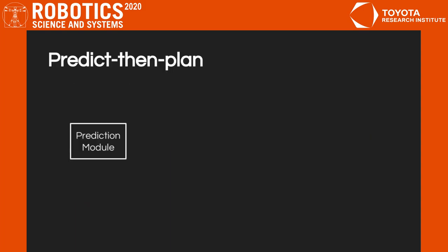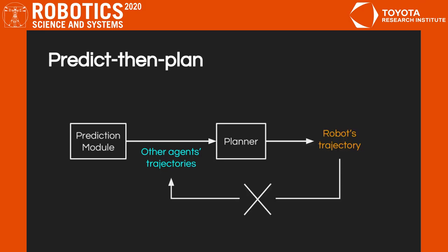Traditional approaches to multi-agent planning adopt a predict-then-plan architecture. First, predictions of other agents' trajectories are computed. Then, they are fed into a planner that considers them as immutable obstacles. This approach is limiting.